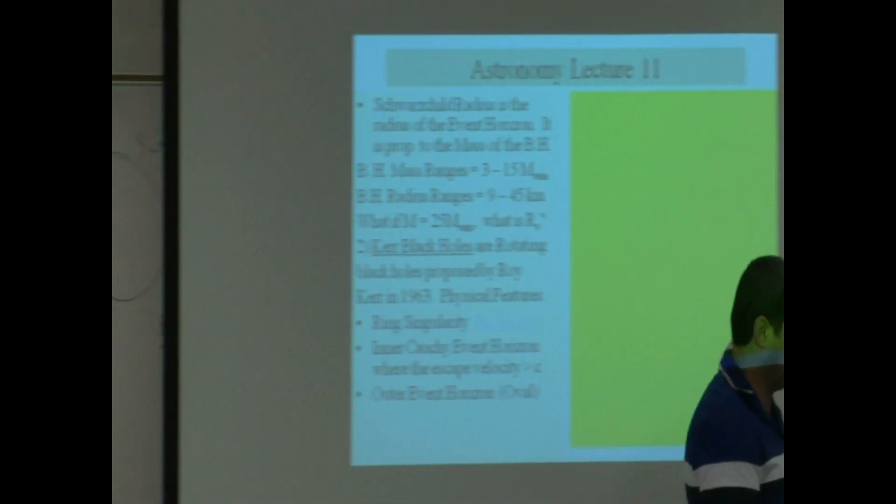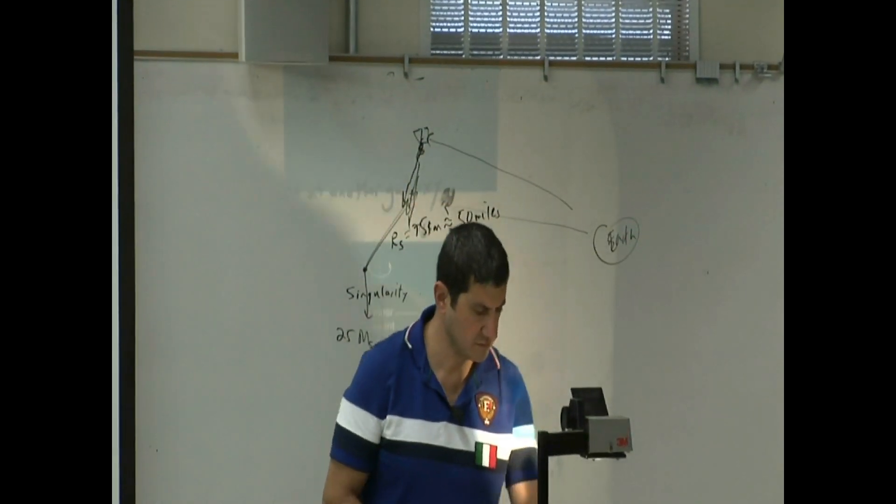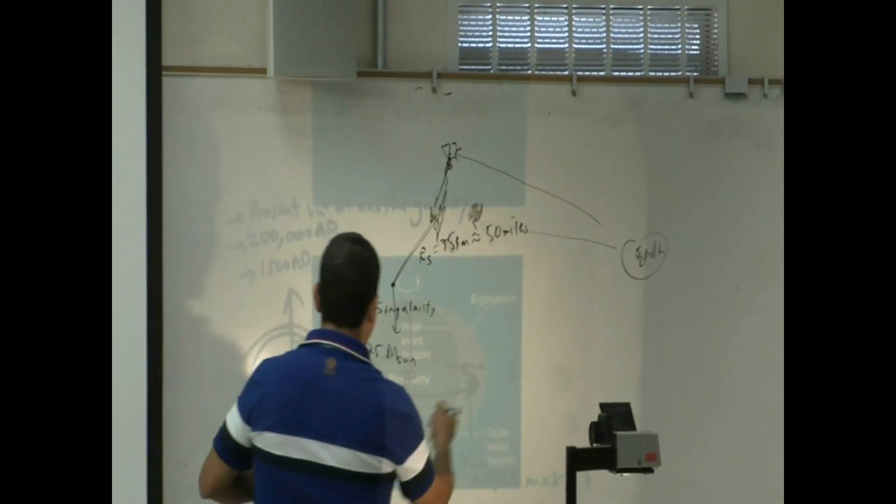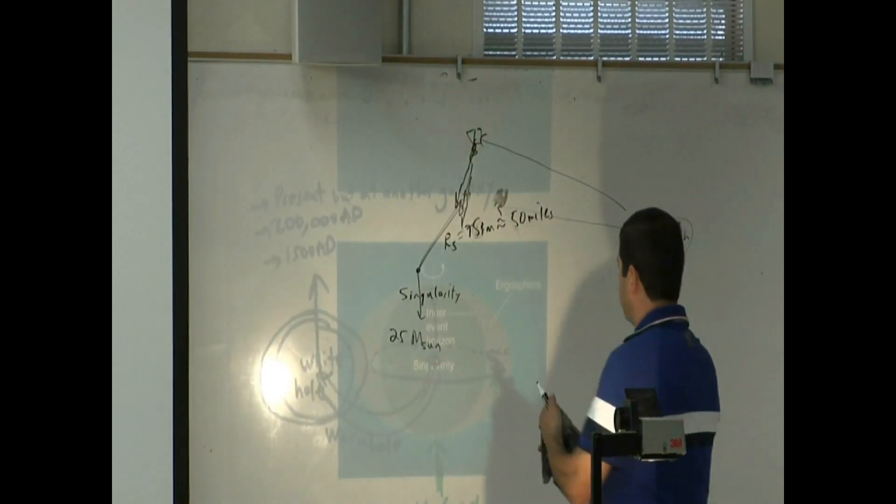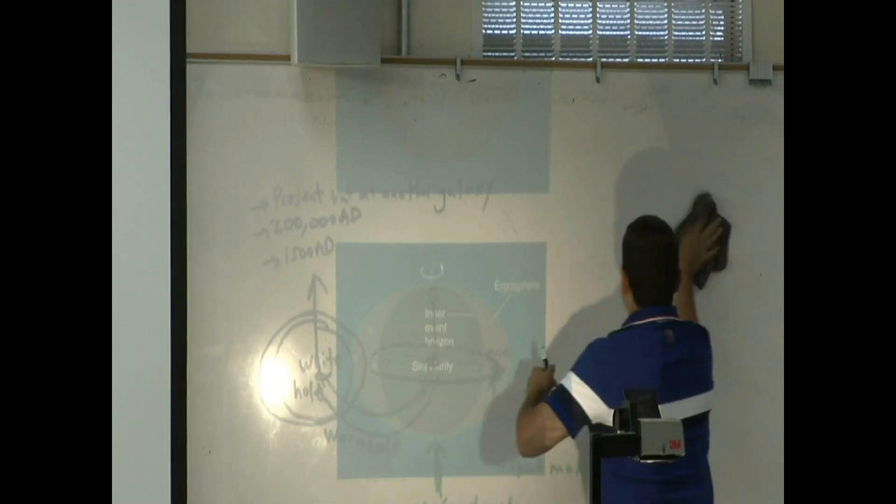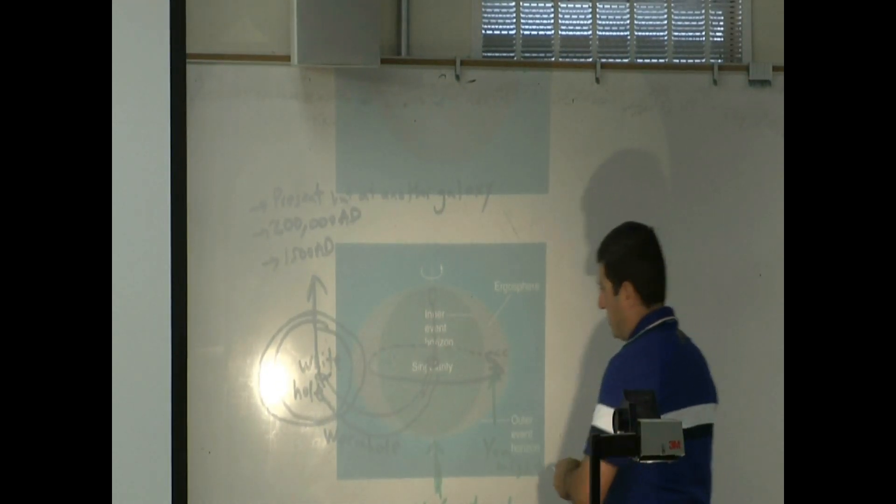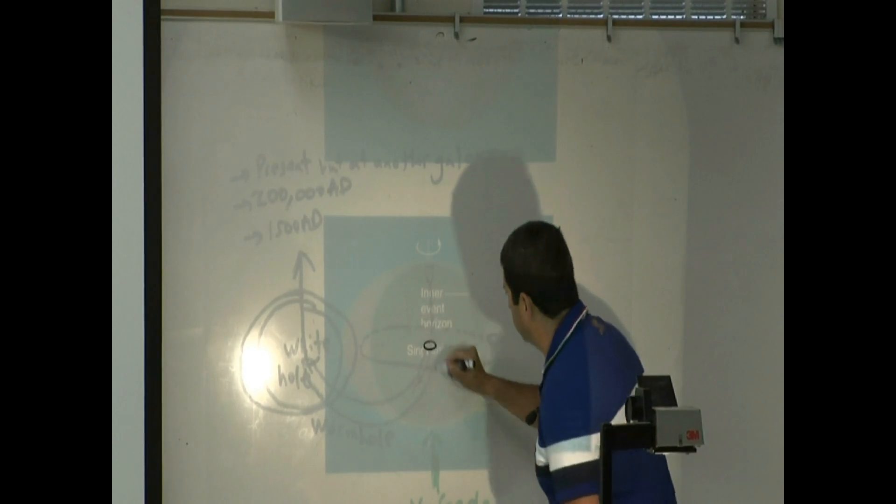So they look something like this. I've drawn so many times over this so that you have drawings and drawings. So let's draw clean here. The singularity at the center, instead of being a point singularity, it looks like a ring. That's the singularity.